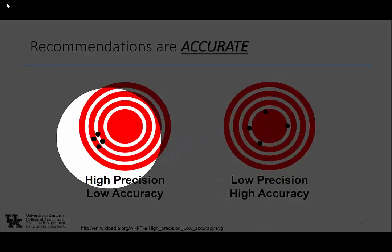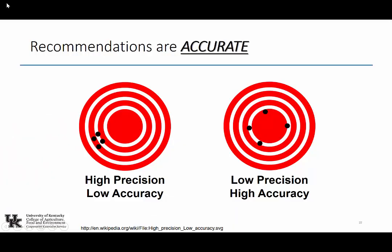People talk about precision ag — this is accurate ag. This is what we do today. Regardless of what technology you bring on the farm, we're still here. Maybe we've got to give up some accuracy to increase our precision. To illustrate: there's a joke — a soil fertility specialist shoots and misses three feet to the left, a soil microbiologist shoots and misses three feet to the right, and the statistician jumps up and says 'Got him!' On average, they hit the deer. That's where we're at.